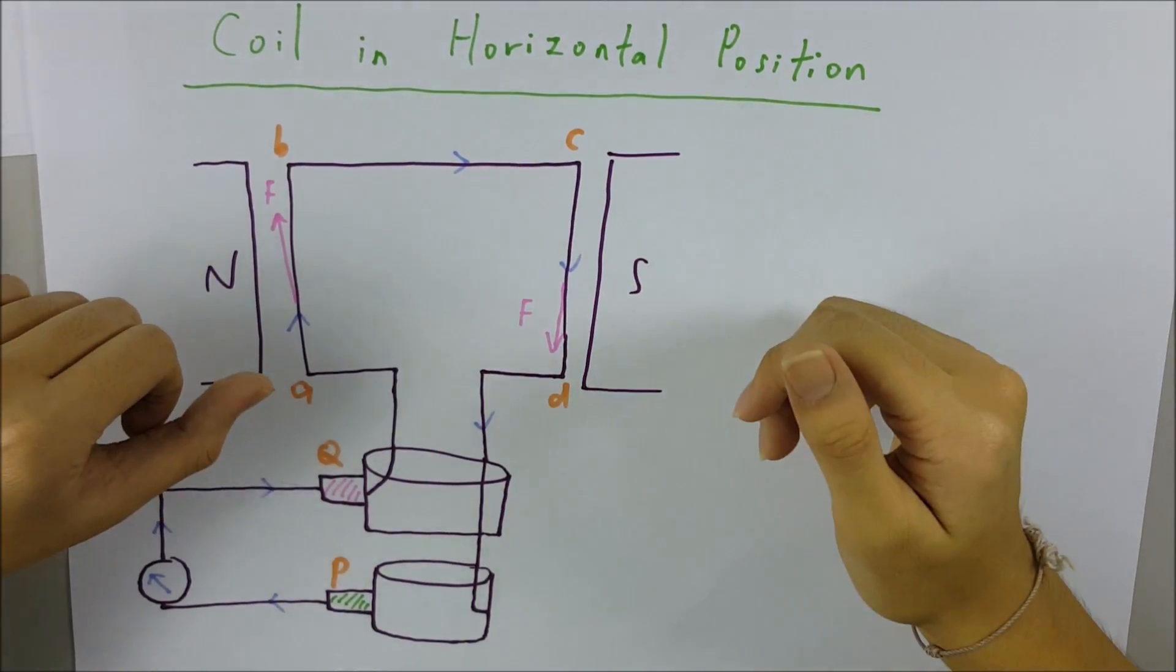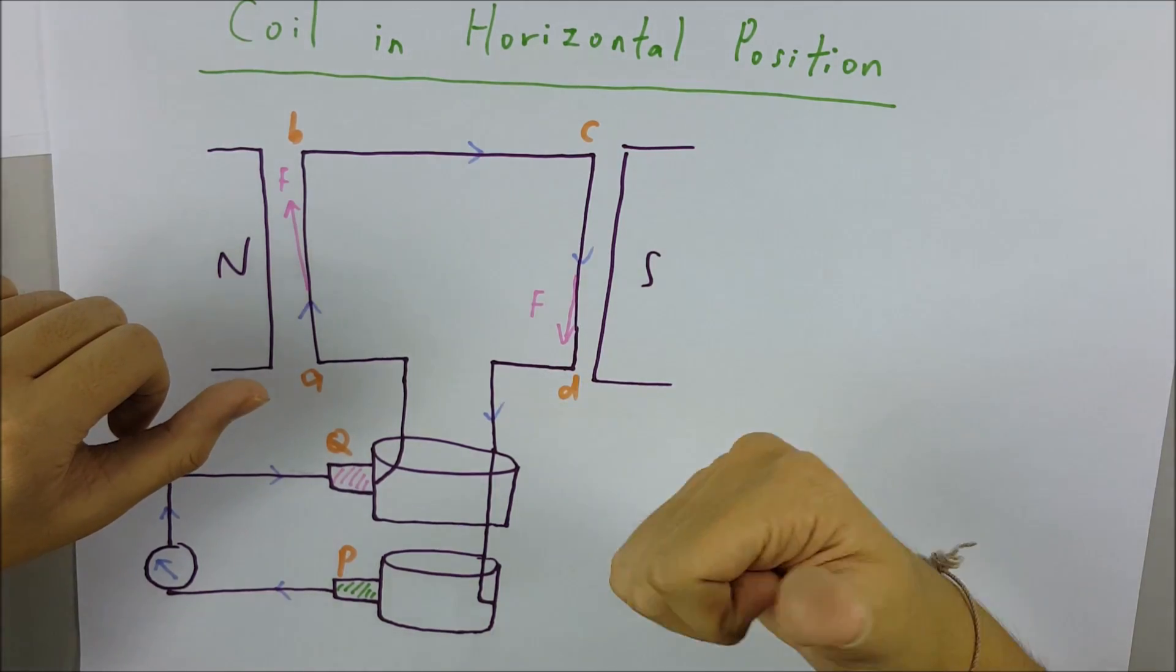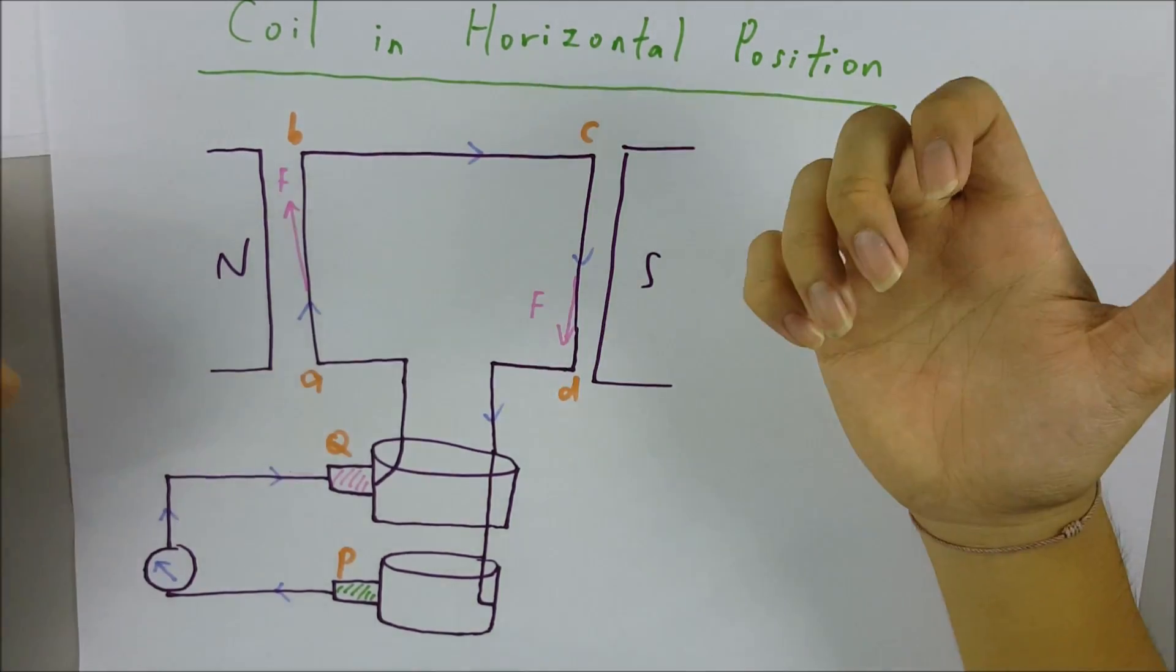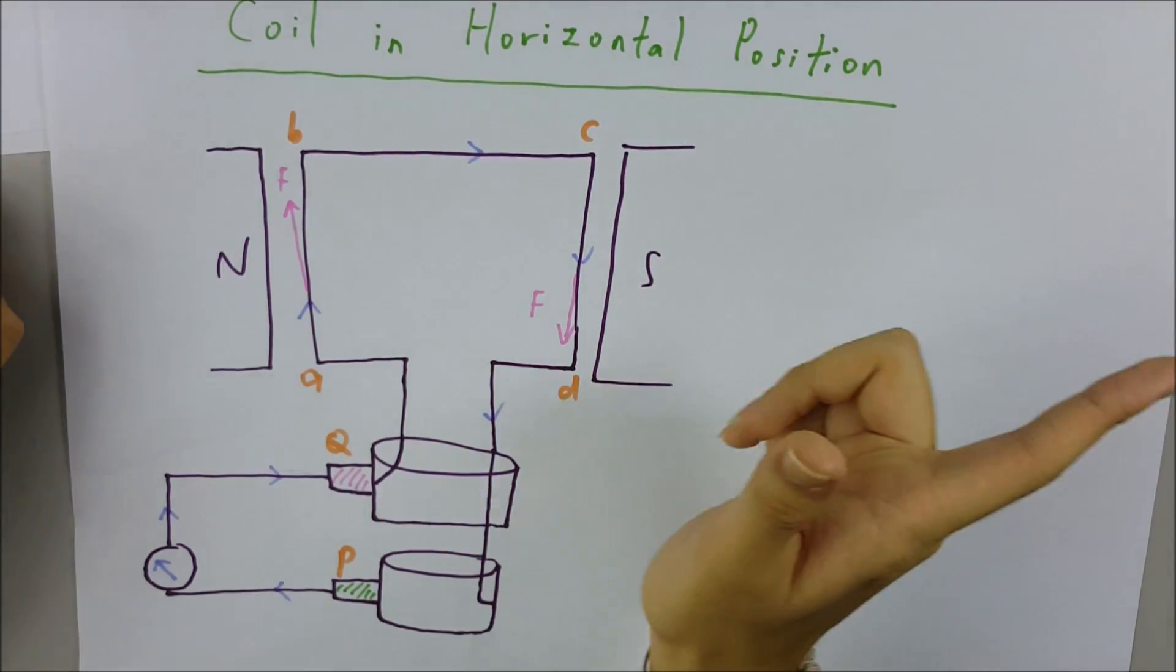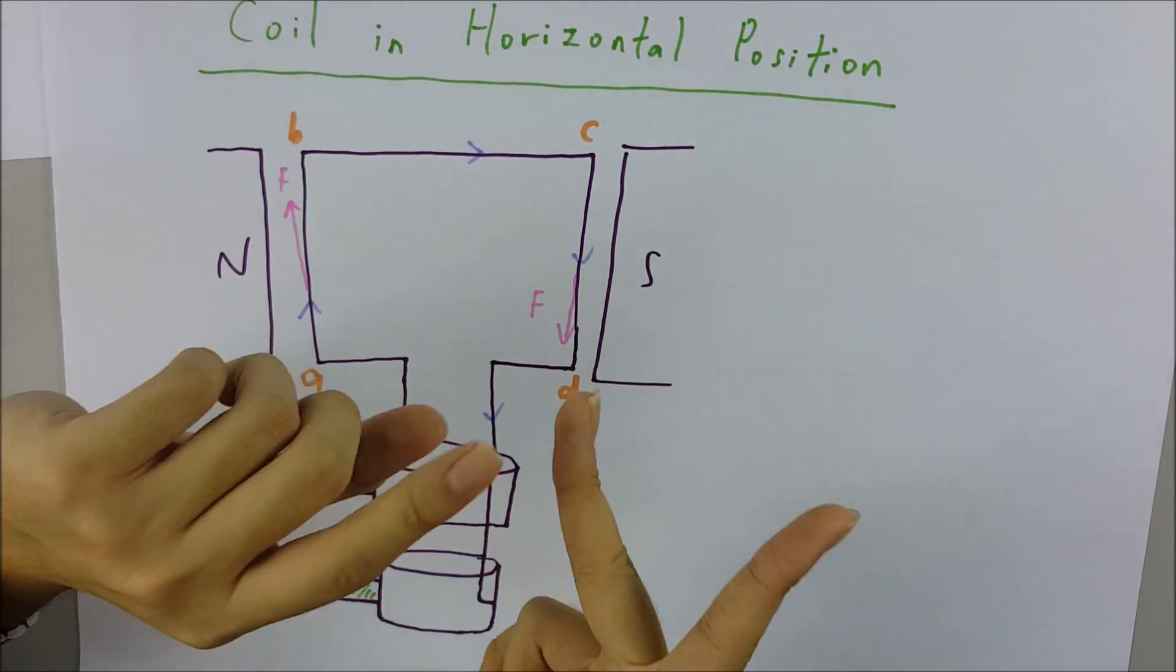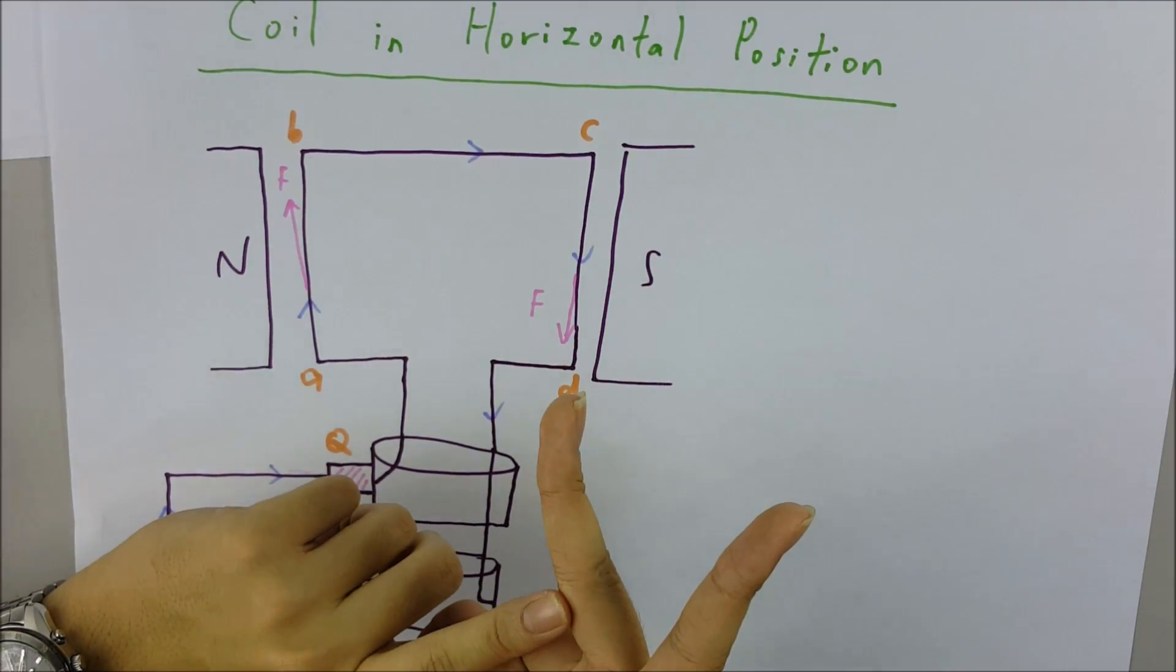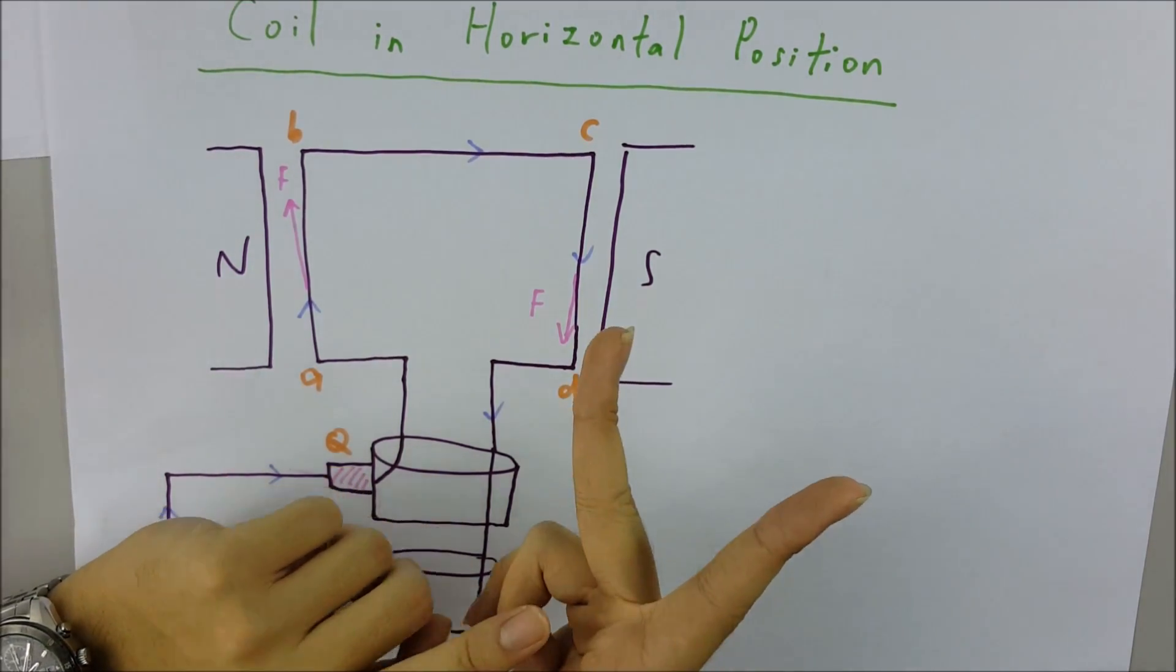So F refers to the force, the thumb is the motion. This is our right hand. The field is from north to south, so the middle finger refers to the induced current. The current moves inwards, just like the blue arrows.